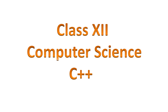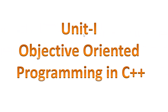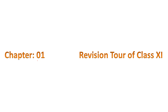We are taking Class 12 Computer Science C++. This is Unit 1, which is Object Oriented Programming in C++. C++ is an object oriented programming language. We are taking the first edition, that is Chapter 1, the revision tour of Class 11. Whatever we have learnt in Class 11, we will try to revise it so that we can get on to the advanced things in C++.